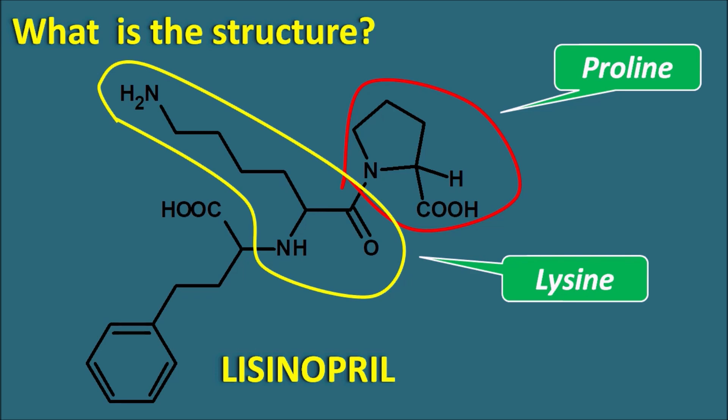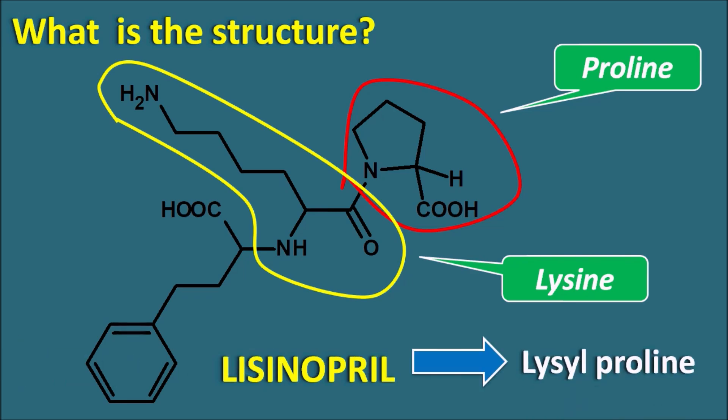That's why Lisinopril is known as lysylproline, and even the name of the drug is derived from this peptide. Lisinopril also has another group which is phenylbutyric acid, attached at the second position to the alpha amino group of lysine. These are the important structural features of Lisinopril.